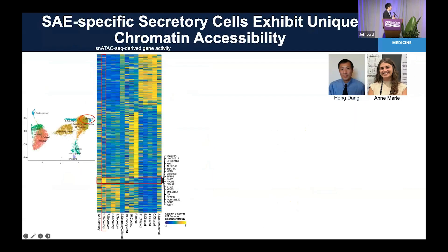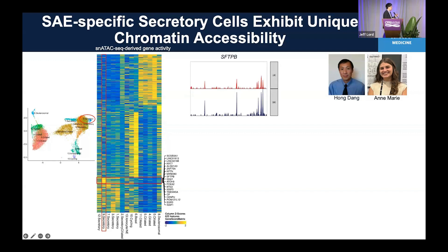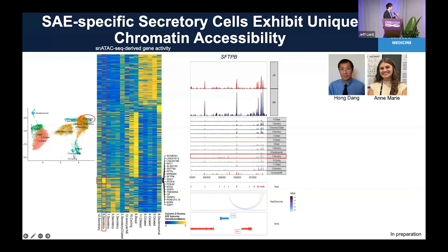Now we look at the ATAC-seq data. This heatmap is derived from open chromatin regions showing which genes are activated. There is a specific gene set showing high intensity in secretory cluster number nine, meaning these genes are activated in those cells more compared to other cell types. When we look at one gene like SFTPB — an already known small airway marker — there is a higher peak in small airway cultures compared to large airway cultures from bulk information. But at the cell-type level, there is a unique peak specifically in the number nine secretory cluster that is not identified in bulk data, correlating well with gene expression.